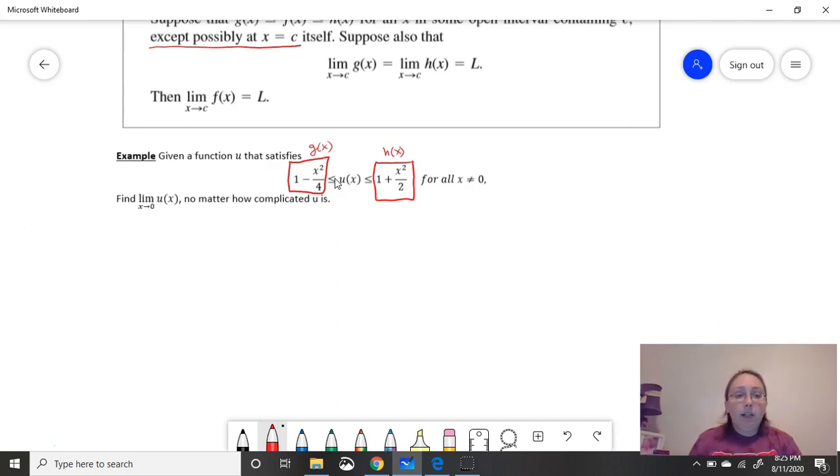So to find the limit of u, remember we don't know what u is. We're going to have to use the two functions that we're bounded by. Now, hopefully, these two functions approach the same limit. If the limit of g(x) is equal to the limit of h(x), remember we're interested as x approaches 0, if this is true, then we're going to know the limit of u because u is stuck in between. All right, so let's do this.